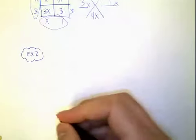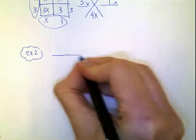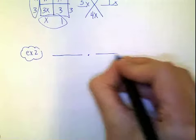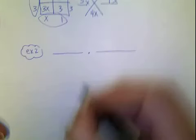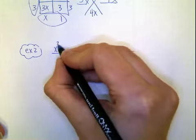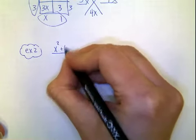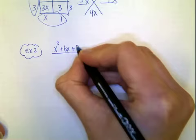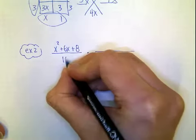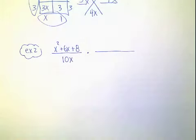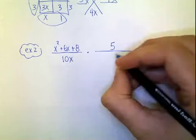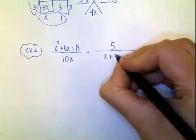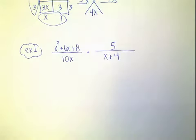How about we have a multiplication problem. So two fractions being multiplied as our setup. And for our multiplication problem, we're going to have x squared plus 6x plus 8 over 10x times 5 over x plus 4. That's going to be my setup.